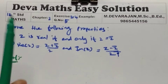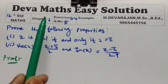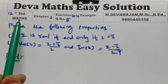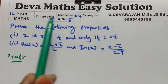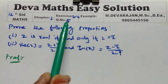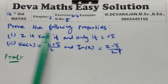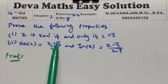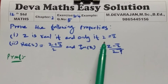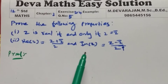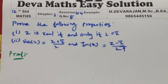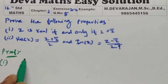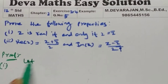Hi everyone, this is Deivang. Today we are going to see Toaster Max Chapter 2, Exercise 2.4, Question 5: prove the following properties. First one: z is real if and only if z is equal to z-bar. So proof for part one.